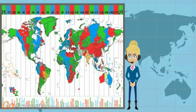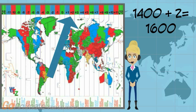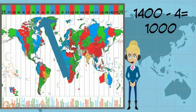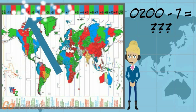Let's work on a few examples together. If Zulu time is 1400 hours and you are in the plus 2 time zone, then your local time is 1600 hours. If Zulu time is 1400 hours and you are in the minus 4 time zone, then your local time is 1000 hours. If Zulu time is 0200 hours and you are in the minus 7 time zone, then your local time is...